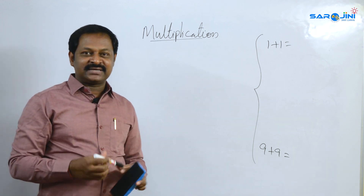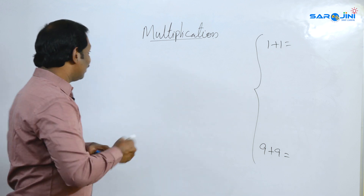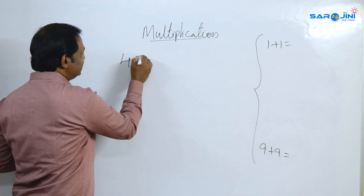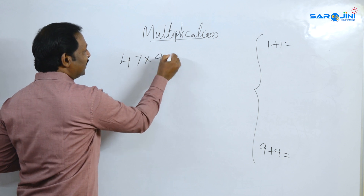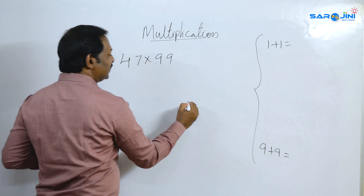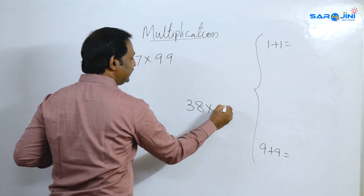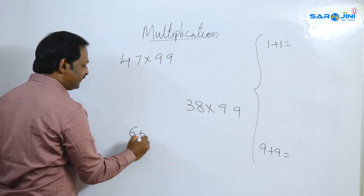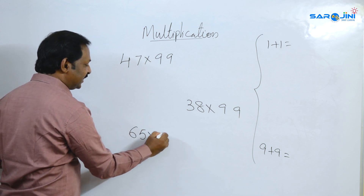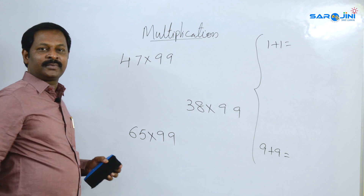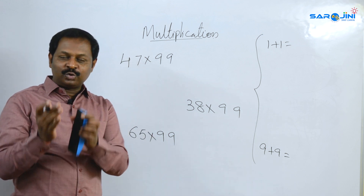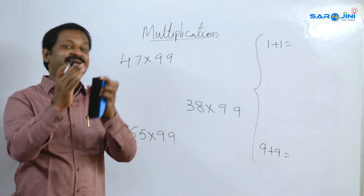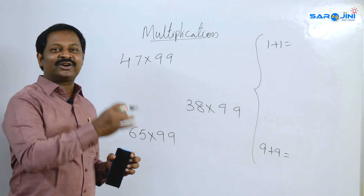Single digit is one number. Easy. Now examples: 47 into 99, 38 into 99, 65 into 99. Two times multiplication, one time addition — three steps total. Cut short — you can call it a special method.